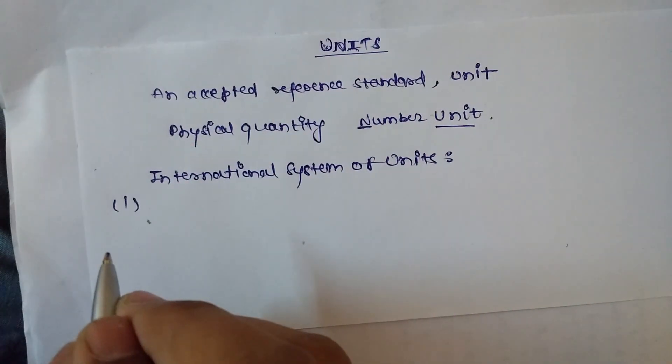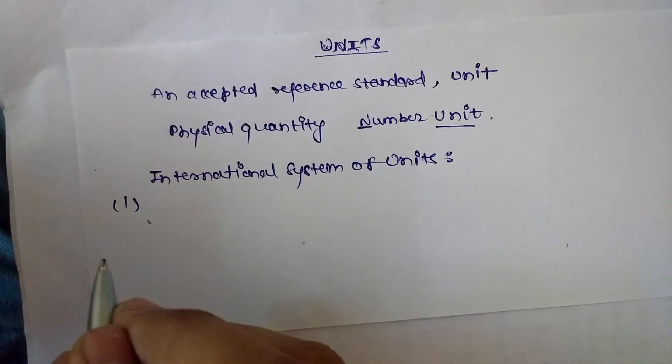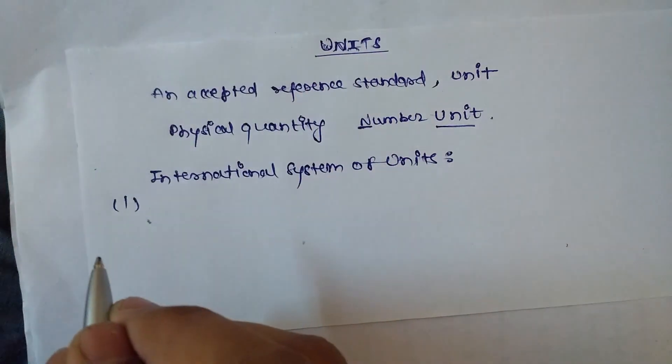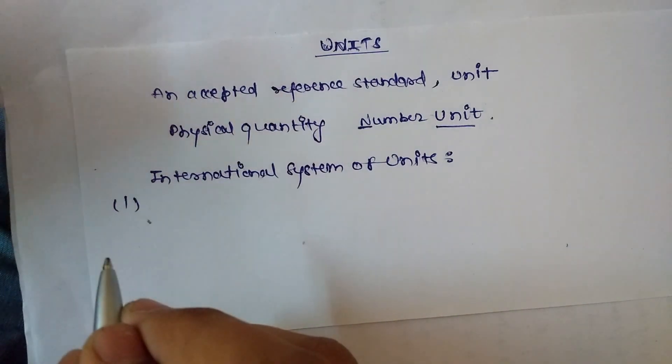Scientists in America were using some other international system, those in England were using some other system of units, in Russia they were using different units, and in other countries they were using different units.